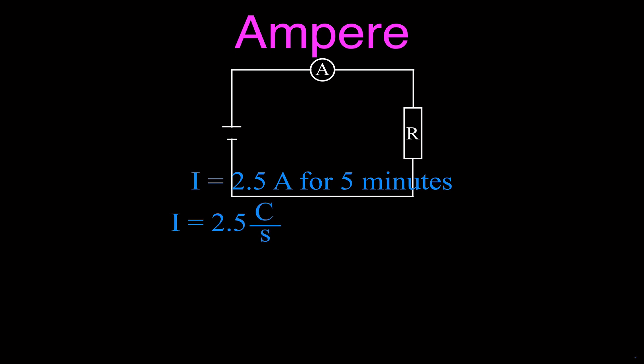Let's figure out first how many coulombs of charge that is in five minutes. Well we know that 2.5 amperes is 2.5 coulombs per second, and we know that in five minutes there are 300 seconds, five times 60. Five minutes, one minute 60 seconds, five times 60 is 300, and that means we get 750 coulombs.